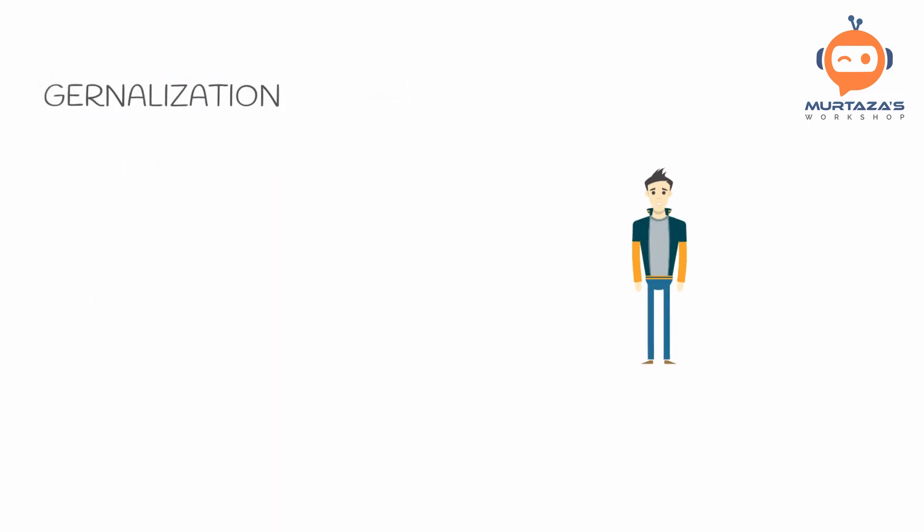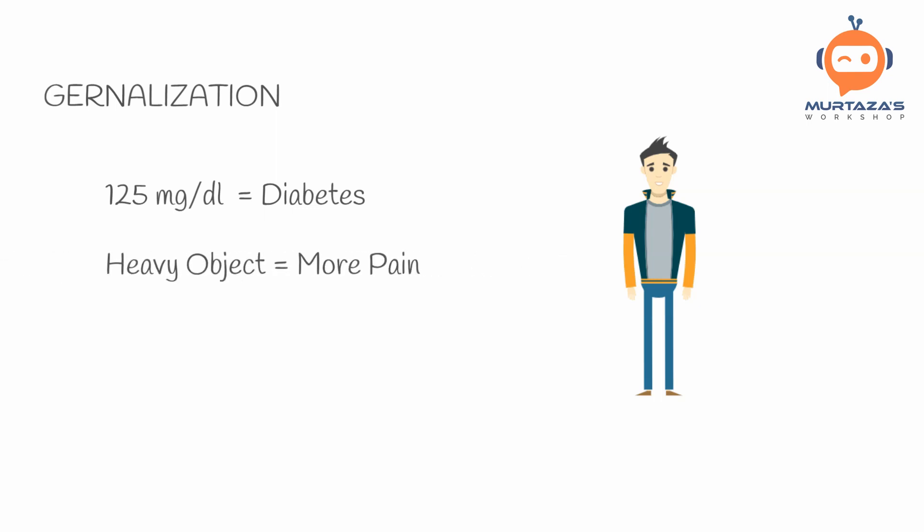As humans, we like to generalize everything. It helps us sleep better at night. Let's have a look at some generalization examples. The 125 mg per deciliter blood sugar level indicates diabetes. This is a generalization. The fact that heavier objects falling on your foot will cause you more pain is also a generalization. And the fact that if you hit the like button, it will help the YouTube algorithm is also a generalization.